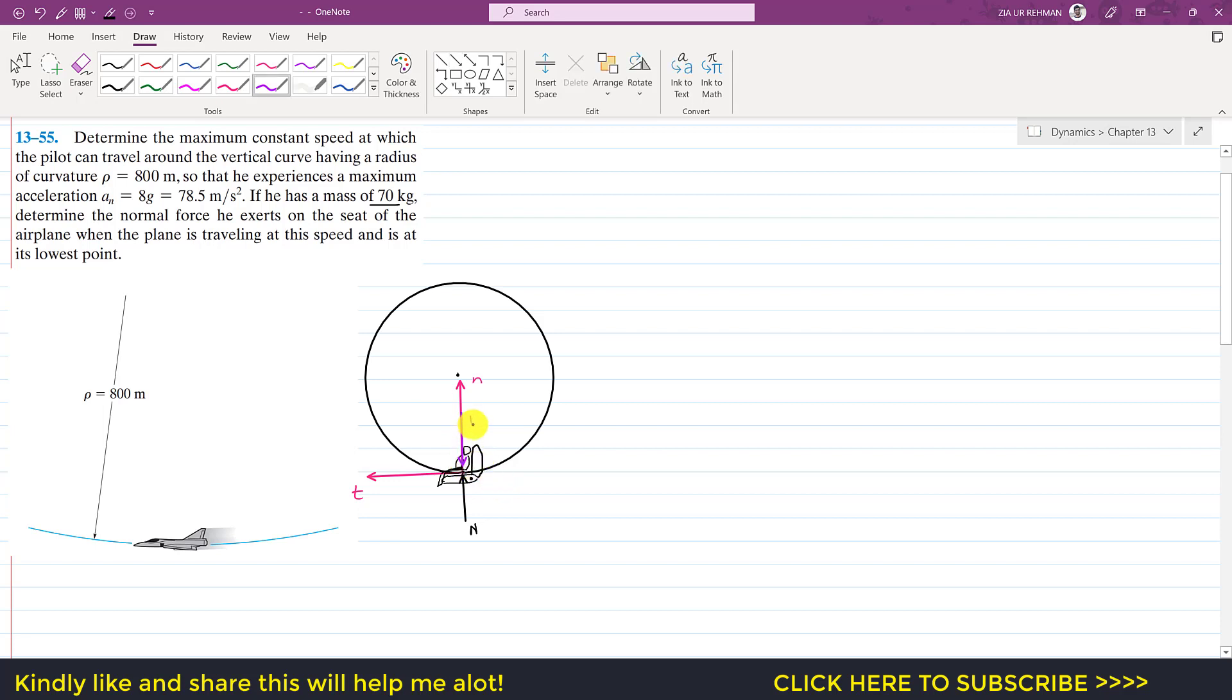the negative n direction. So this is his weight. His mass is 70 kg so its weight will be 70 times 9.81 newtons. So first of all we are required to find its constant speed, maximum constant speed.